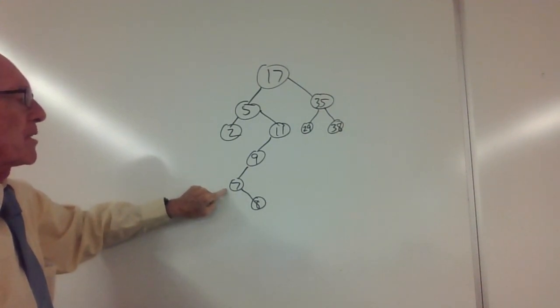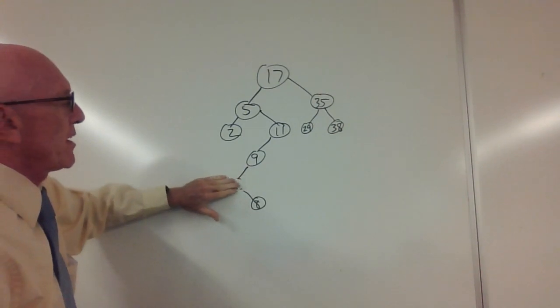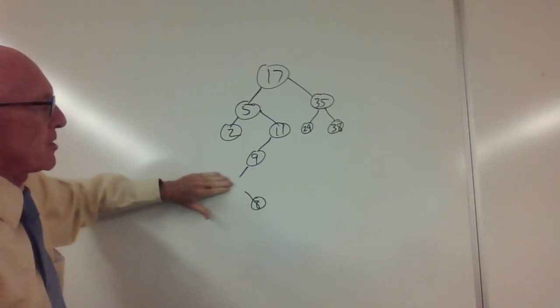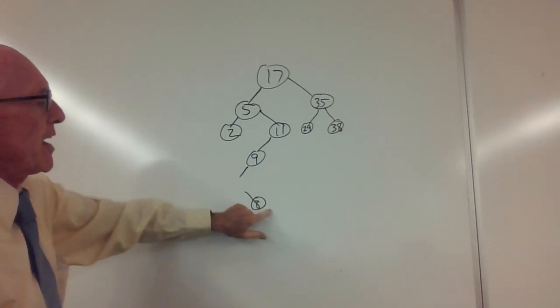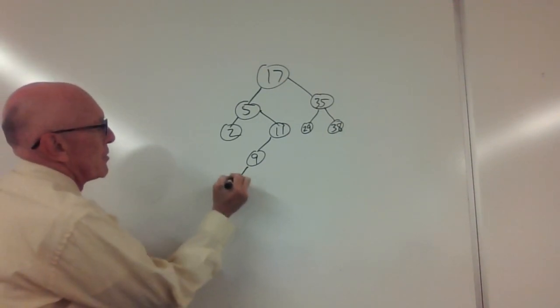I have to splice out the 7. What this means is that I'm going to have to take away this node temporarily. The 8 now must move to the left of 9.